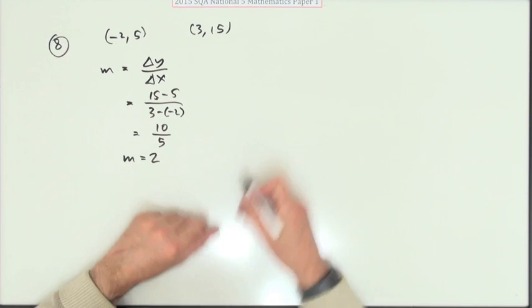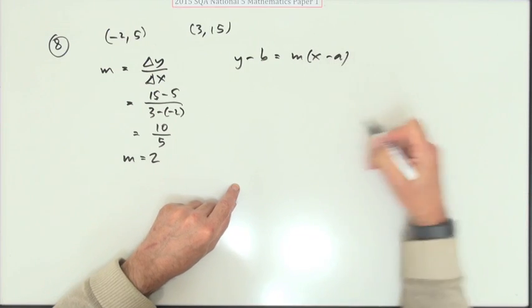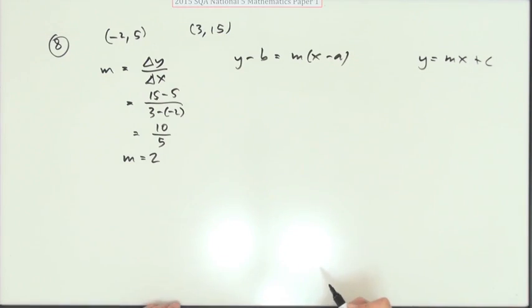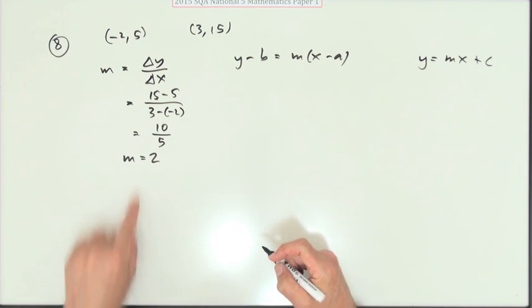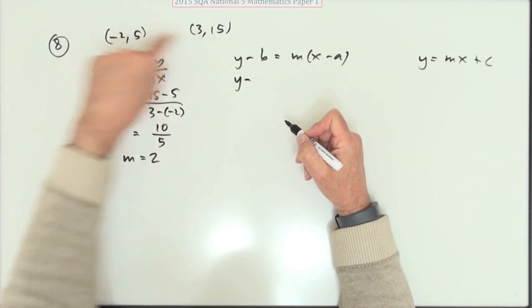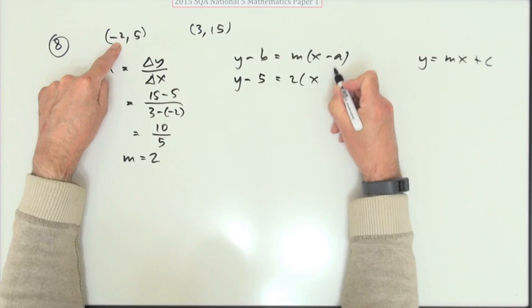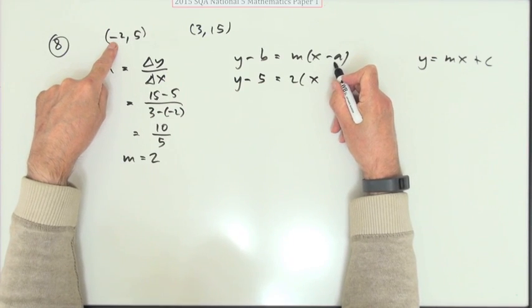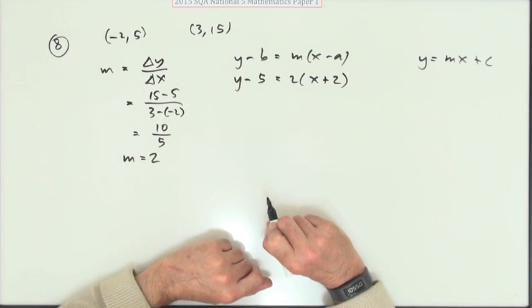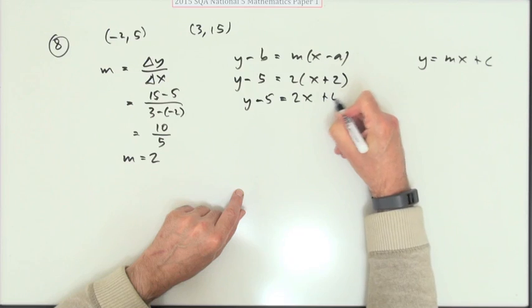Now there's two ways you could proceed. You could either go for y minus b equals mx minus a, or you could just go for y equals mx plus c. Either route will take you to the same answer. Say we take this one. So if the gradient's 2, I've got y minus, now pick a point that takes your fancy. Maybe take this one. y minus 5 equals 2 times x minus minus 2. So I'm just going to jump straight in bravely with a plus 2. In its simplest form. Right. Well let's multiply out the bracket. 2x plus 4.